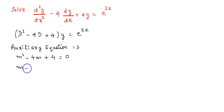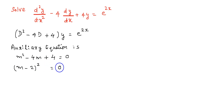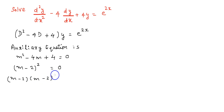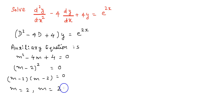m² - 4m + 4 can be written in the form (m - 2)² = 0, that means (m - 2)(m - 2) = 0. Therefore we get the roots as m = 2, and in the other case also m = 2.